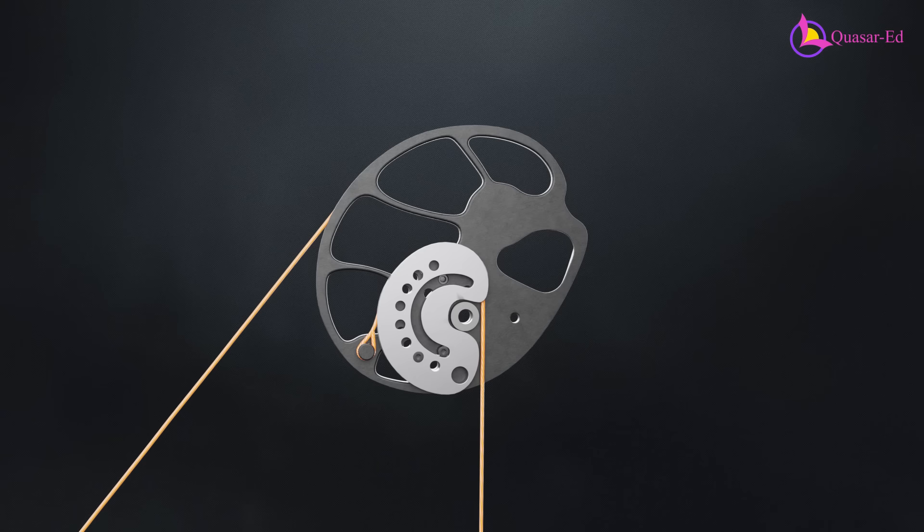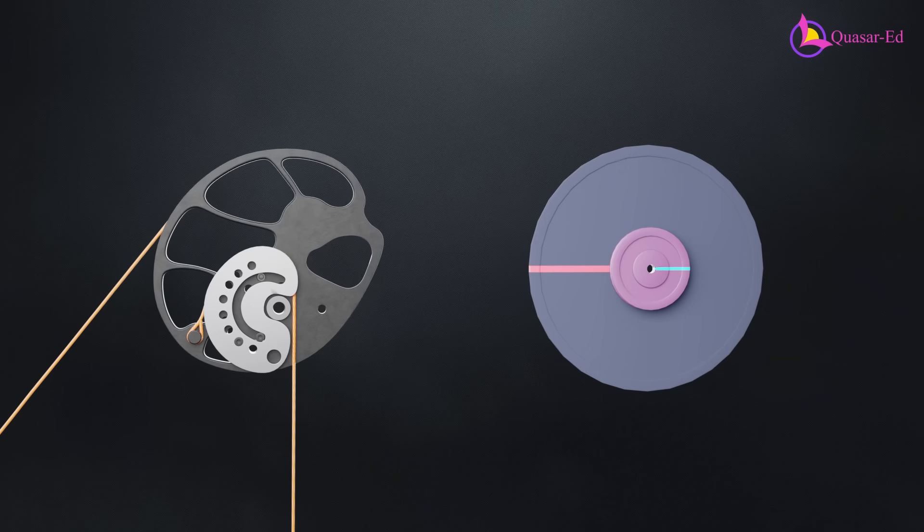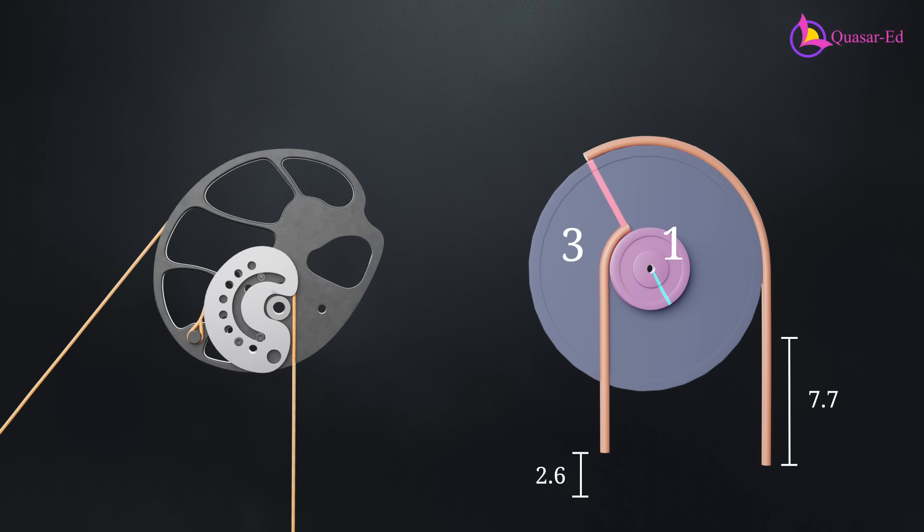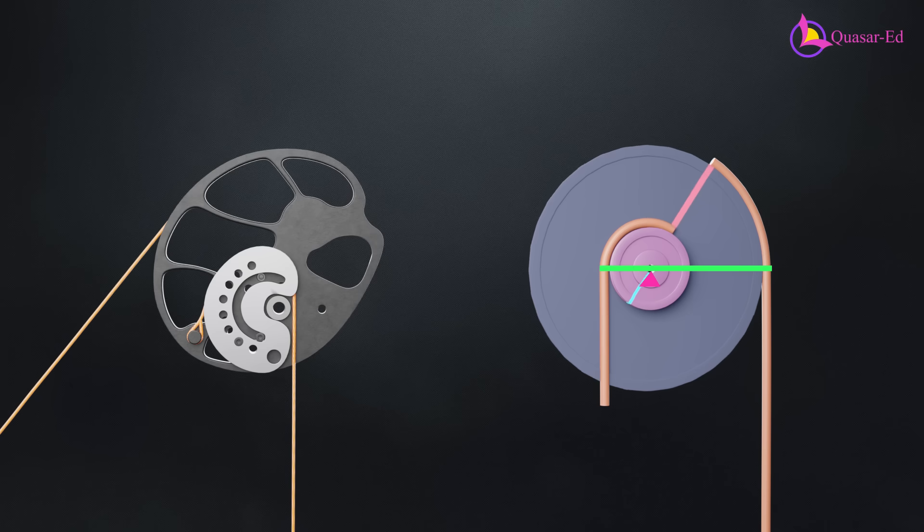The mechanical advantage of a cam system comes from the ratio between the inner and outer cam radiuses. For example, if the outer cam radius is three times the radius of the inner cam, the inner cam pulls the string at one-third the rate of the outer cam, creating a 3 to 1 mechanical advantage. This principle is similar to a simple lever system, where the mechanical advantage remains constant when using circular cams.